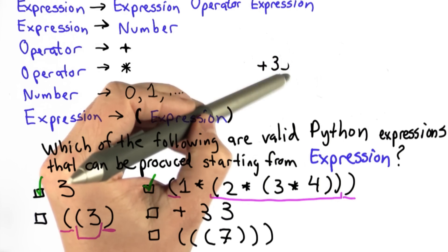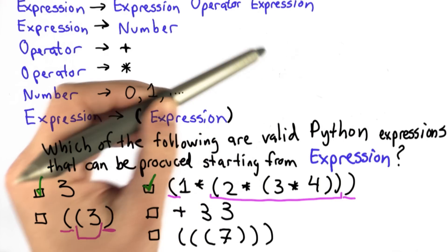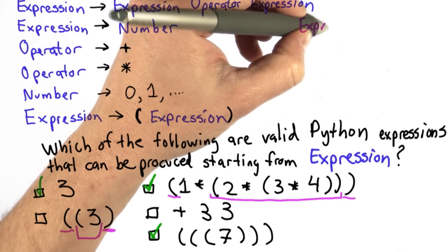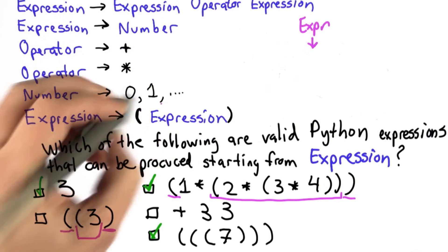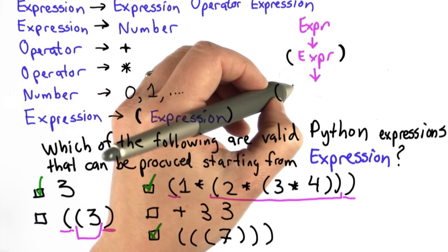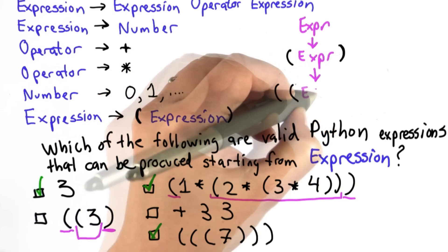And the fifth one is valid. It's not sensible or necessary to have nested parentheses like this, but we can always keep using this rule. So we can derive that expression starting from expression using the last rule with the parens. We're going to end up with paren expression paren, close paren. We can use that rule again.